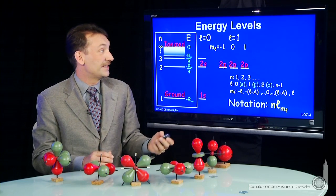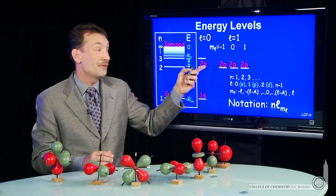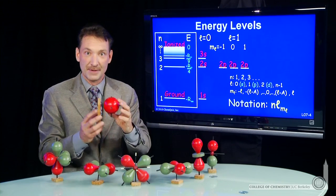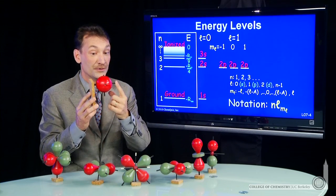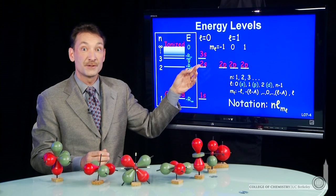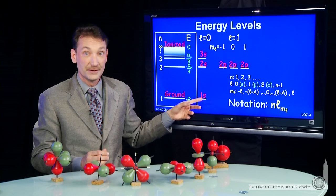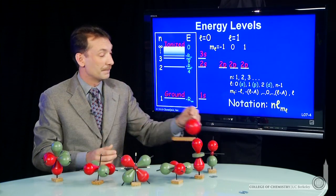Now, we can continue and go to principal quantum level 3. And a 3s orbital is also possible. It'll also be spherically symmetric. It'll have more nodes. It'll have two radial nodes than the 2s, which has one radial node, and the 1s, which has no nodes. So the number of nodes increase, but the overall spherical symmetry remains the same.